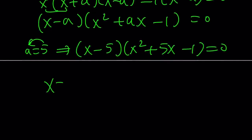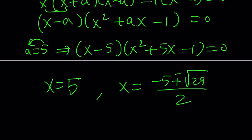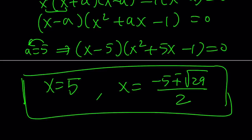You're going to get x equals 5, and x equals negative B plus minus the square root of 29 over 2. There are three real solutions to this cubic equation, which indicates that when we take a look at the graph of it, it's going to have three x-intercepts. So let's take a look at the graph now and see what that looks like.